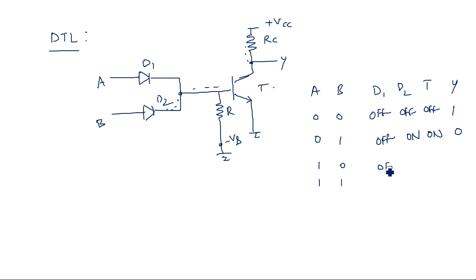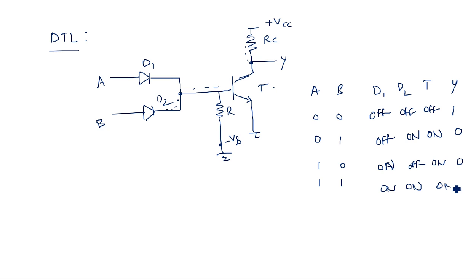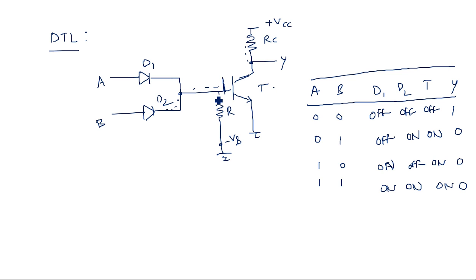Similarly when A equals 1 and B equals 0, diode D1 is ON and D2 is OFF — again output is 0. Now when both A and B are logic 1, both diodes are ON, transistor T is also ON, and output equals 0. Operation-wise it is straightforward. Up to here we have an OR gate with inverter — whatever the gates seen in previous diode logic, the same is used but additionally we connect the output to an inverter. This is about DTL logic.